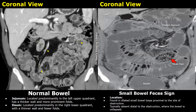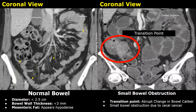This case of small bowel obstruction was due to a cecal mass. A tumor is present in the cecum which is the cause for this obstruction. You can see the transition point over here where there is an abrupt change in the diameter of the ileum, so this is the site of the obstruction.